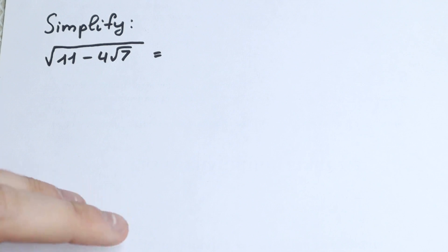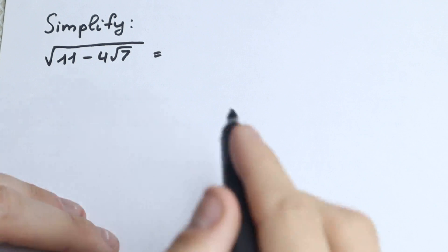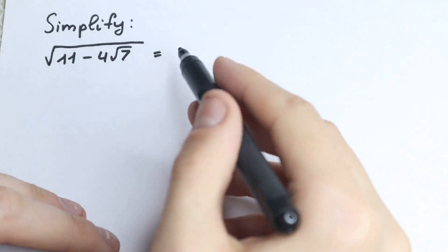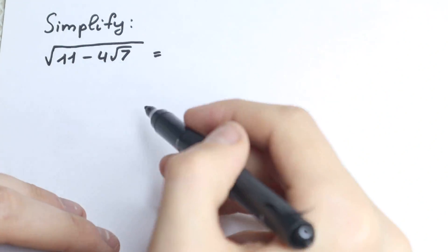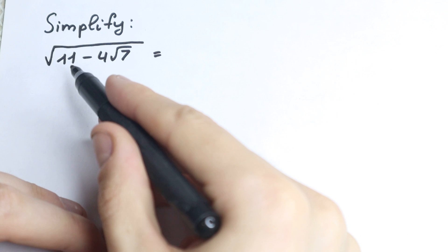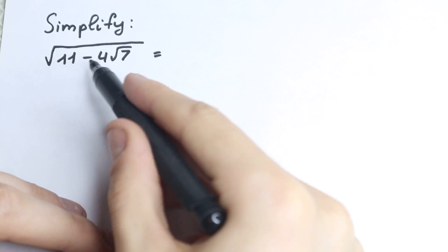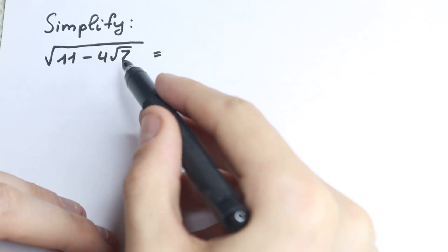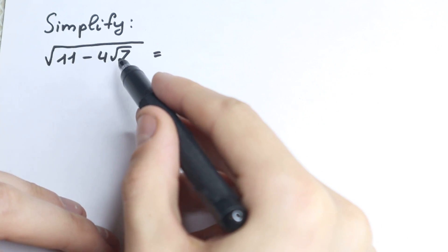Welcome to my channel Higher Mathematics. We have a really interesting challenge today. We need to simplify this expression: square root of 11 minus 4 square root of 7.